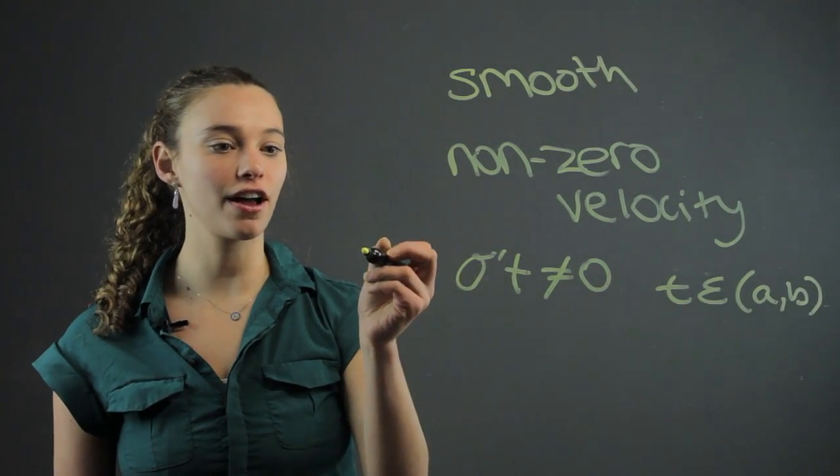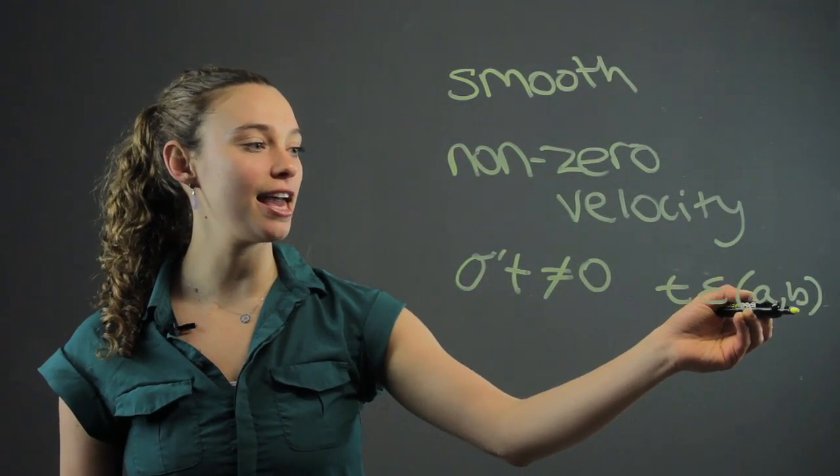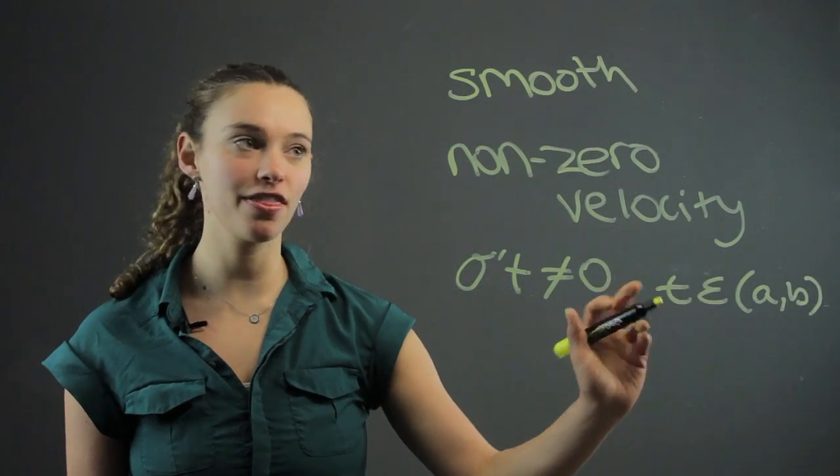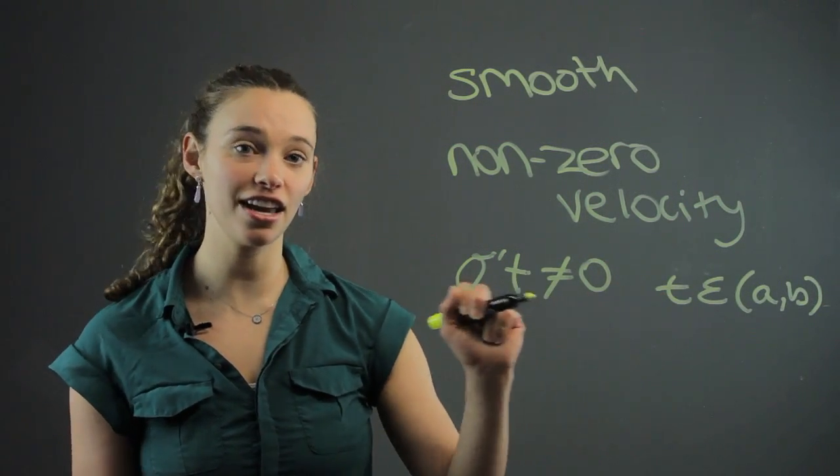This is on a curve where at any point - point a, point b, any point on this curve - the velocity cannot equal zero.